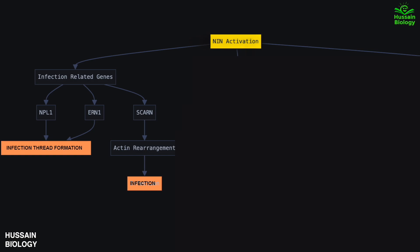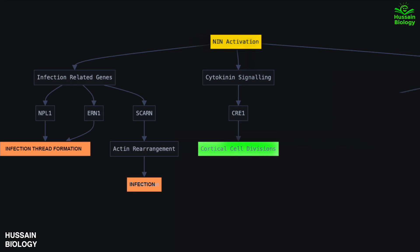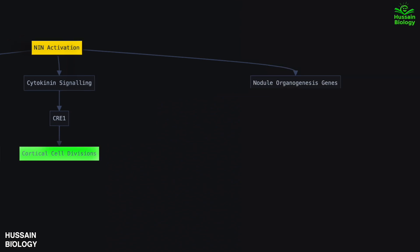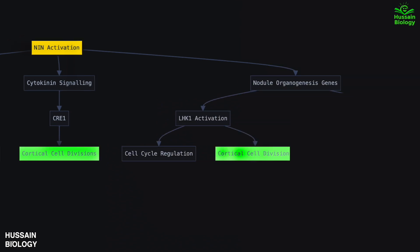Secondly, NIN drives activation of CRE1, which further mediates cytokinin signaling, from where we get cortical cell division. There is also activation of LHK1, which aids in cell cycle regulation and cortical cell division.